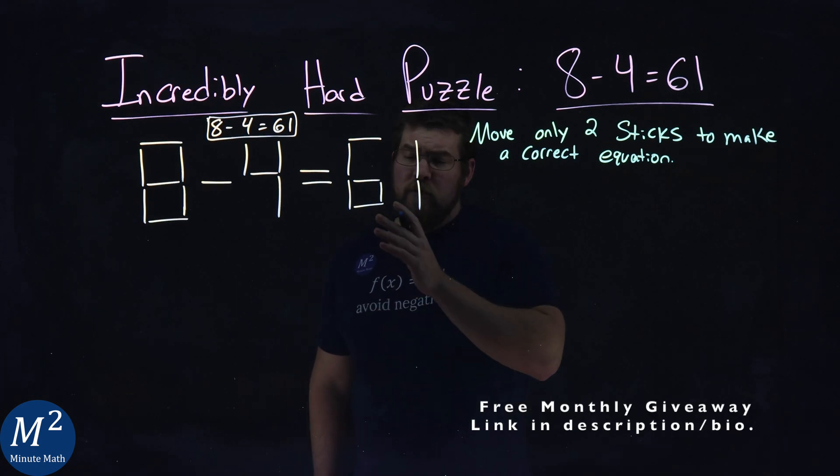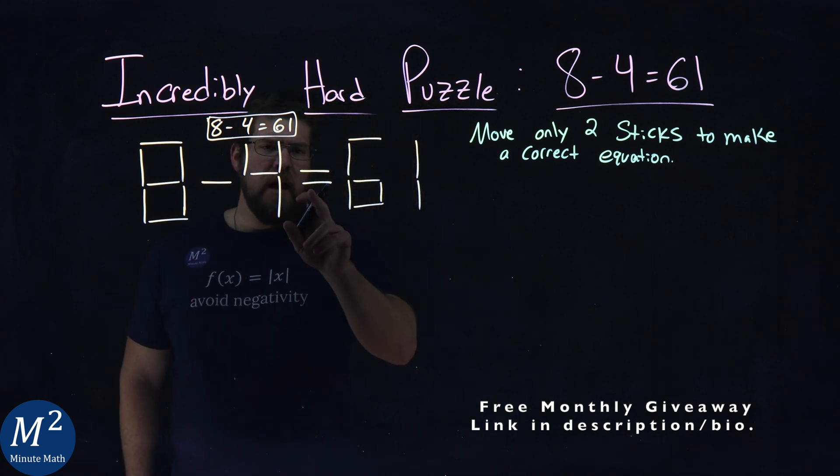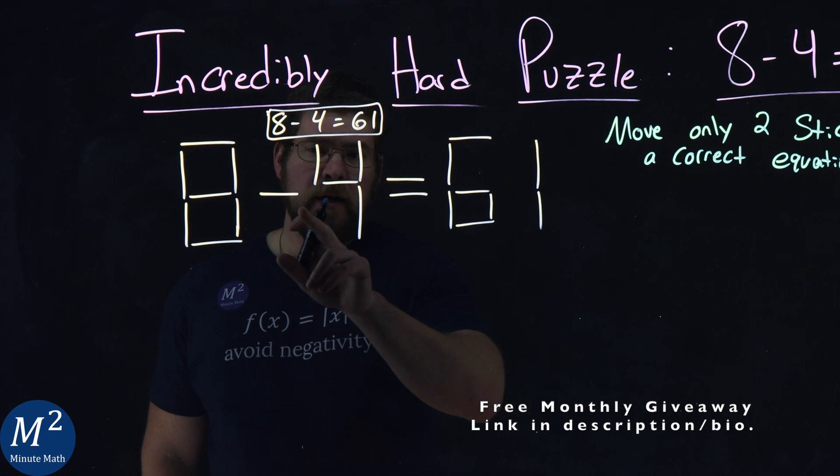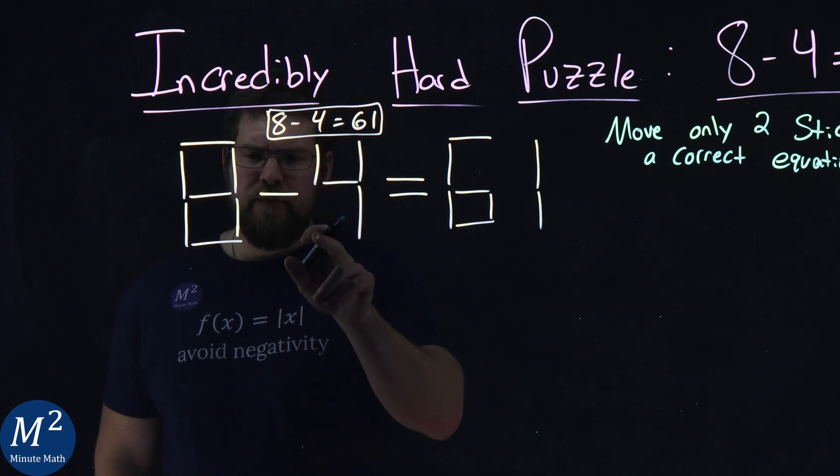All right, so now I'm going to try this problem. I'm going to move just two sticks, like I said. I'm going to move this equal sign stick right here to this spot, and this inside stick for the 4 to make it 11. So let's do that.